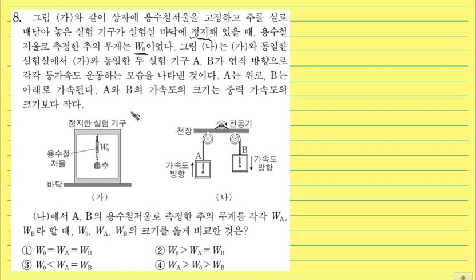그림 나는요, 가의 동일한 실험실에서 가와 동일한 두 실험기구 A, B가 연직 방향으로 각각 가속도 운동을 하고 있어요. 등가속도 운동을 하는 모습을 나타낸 거고요, 힘을 받는다는 얘기예요. A는 위로 그 다음에 B는 아래로 가속된다고 되어 있습니다. A, B의 가속도 크기는 중력 가속도의 크기보다 작다고 되어 있고요.